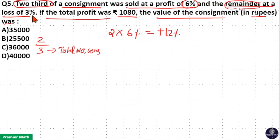Remainder at a loss of 3%. Out of this 3 units, 2 units already sold. Remainder is 1 unit. So, 1 unit sold at a loss of 3%. Loss means minus, so 3%.